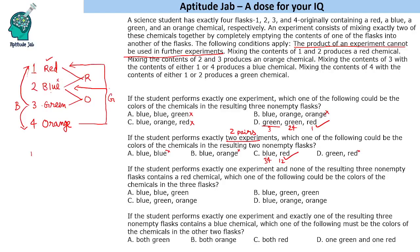So we can either mix 1 and 3, or mix 1 and 4 - two possibilities. If we mix 1 and 3, we get blue, and the remaining flasks are 2 (blue) and 4 (orange). So the result would be blue, blue, orange.